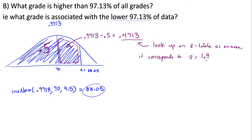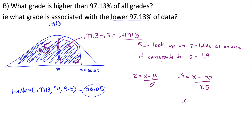We know this is z = +1.9 because we're dealing with a grade higher than more than half of the data, so it falls above the mean. Now we convert z = 1.9 into an exam score using the z-score formula: 1.9 = (x − 70) / 9.5. Solving algebraically, x = 88.05.